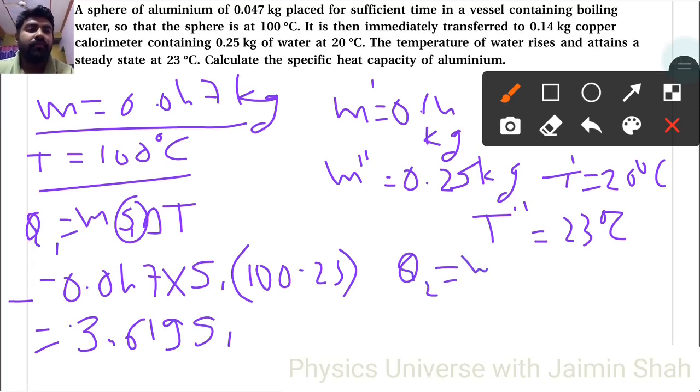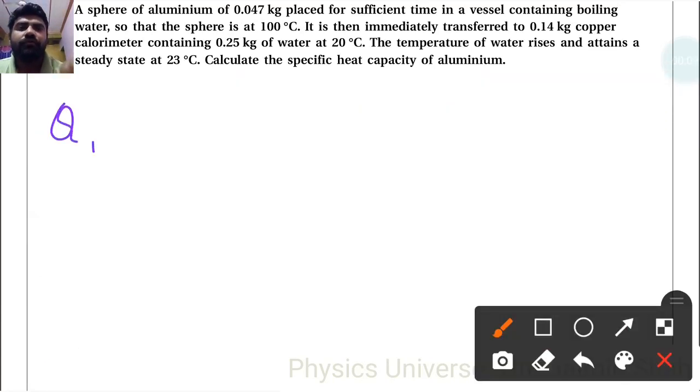Q2 equals M2 S2 delta T2 plus M3 S3 delta T3. We found Q1 which is 3.63 S1, and Q2 equals 3.3 times 10 to the power of 3.